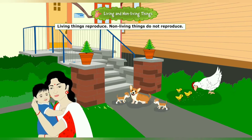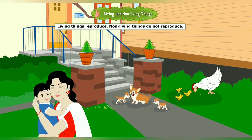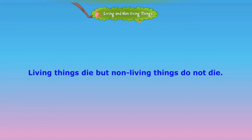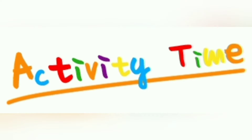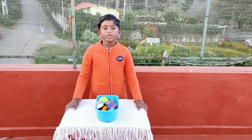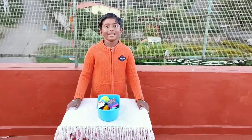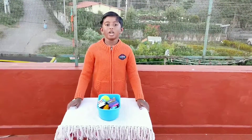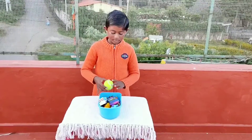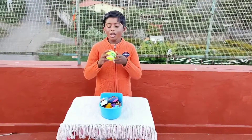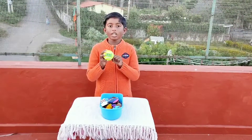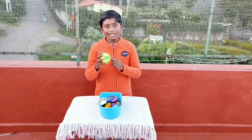Every living thing reproduces. Finally, living things die, but non-living things do not die — they only break or get damaged. Activity time! Today I'm going to classify things as living and non-living. A ball is a non-living thing, a man-made thing.